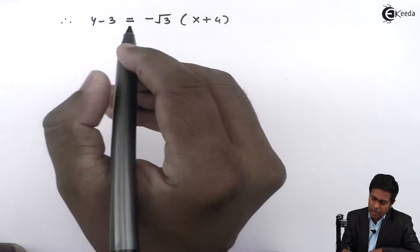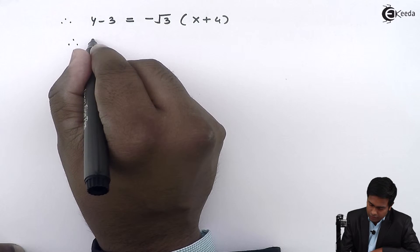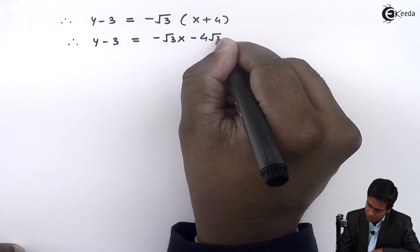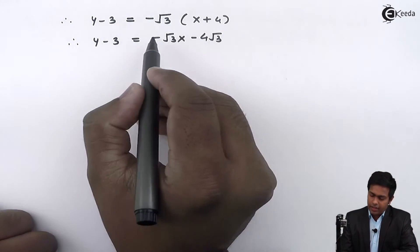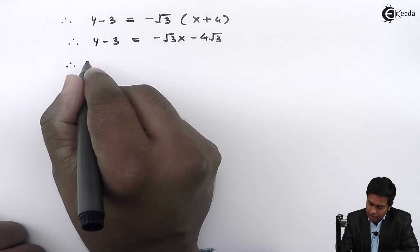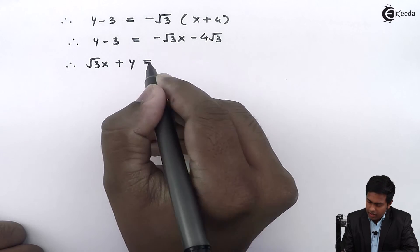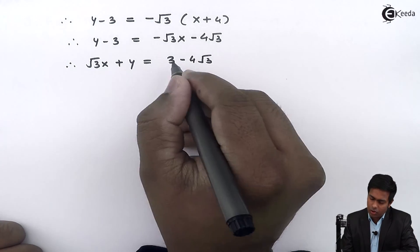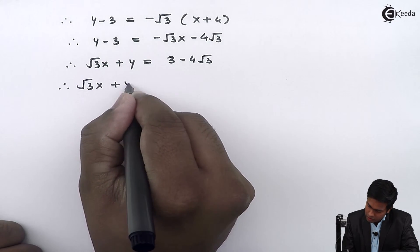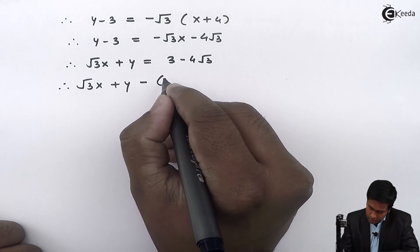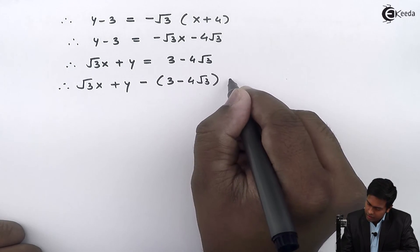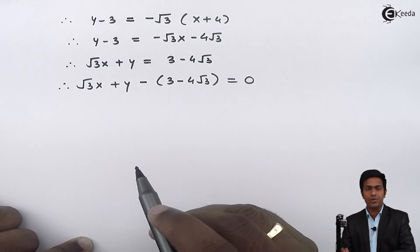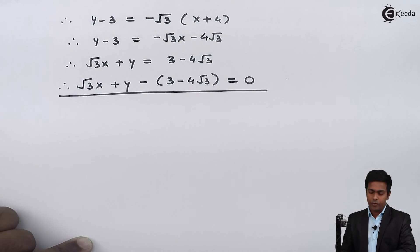Multiplying out the bracket: y - 3 = -√3·x - 4√3. Taking the x term to the left-hand side: √3·x + y = 3 - 4√3. Taking the constant to the left-hand side as well: √3·x + y - (3 - 4√3) = 0. This puts the line in the standard ax + by + c = 0 form, and this is the equation of the required line.